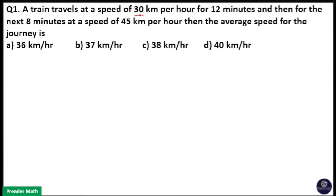A train travels at a speed of 30 km per hour for 12 minutes, and then for the next 8 minutes at a speed of 45 km per hour. Then the average speed for the journey is...